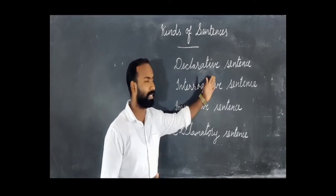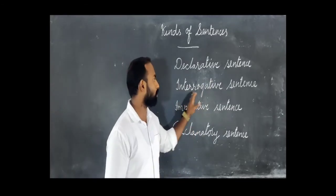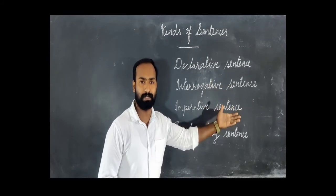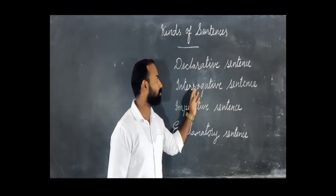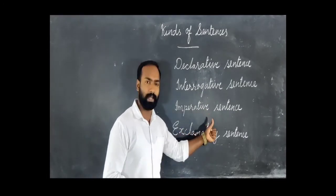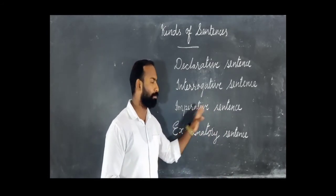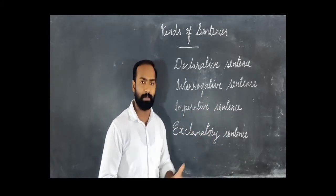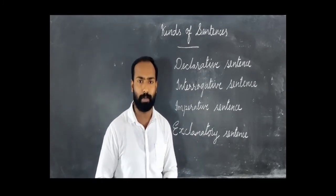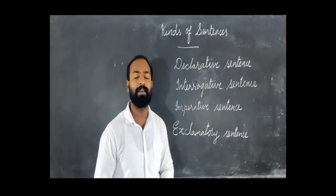Once again: a declarative or assertive sentence is a statement and ends with a full stop. An interrogative sentence asks questions and ends with a question mark. Imperative sentences are commands or requests. An exclamatory sentence shows a strong feeling and ends with an exclamation mark. Students, learn it well. We will see you in the next class. Till then, take care. Bye-bye.